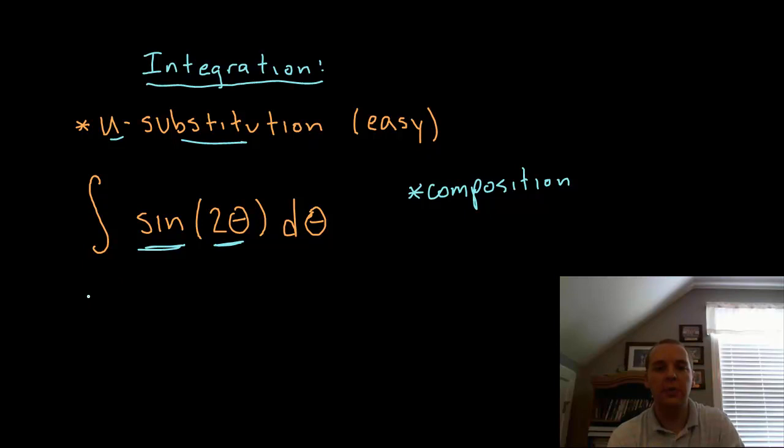So when you want to use u substitution, what we're doing in u substitution is we're letting part of the integrand be represented as u and we're going to try to write this integrand in terms of u which will look simpler instead of theta. Typically we let the inside of the two composed expressions be the u, so we'll let this be 2 theta.